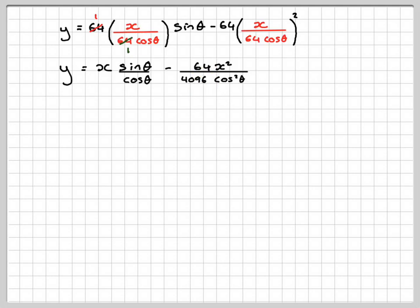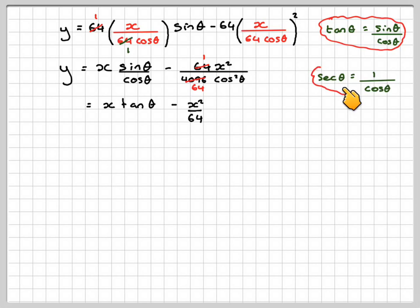And then we've got 64x squared. And then if we square this, we get x squared over 4096 cos² θ. But it's going to cancel here eventually. And now we can start using a bit of trigonometry. We know that tan θ is sin θ over cos θ, so we can replace this with tan θ. So we've got x tan θ.